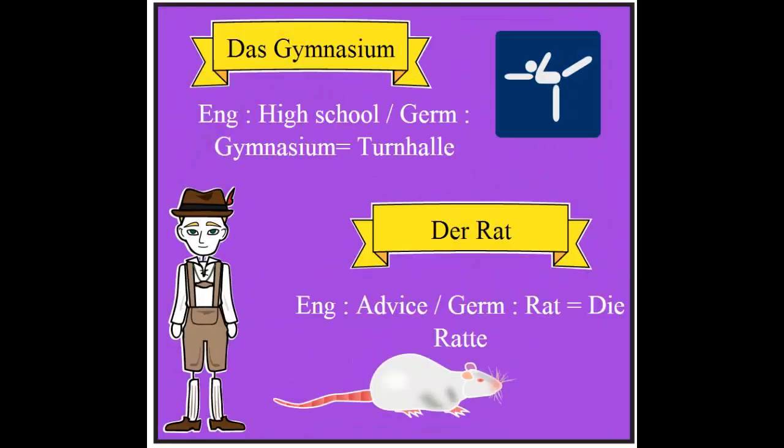'Gymnasium' — Gymnasium is the high school in the German educational system, but the translation for the English word 'gym' or 'gymnasium' is 'Turnhalle.' 'Rat' — the German word 'Rat' means 'advice,' but the German word for the English word 'rat' is 'Ratte.'